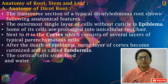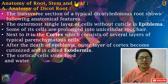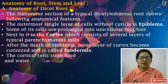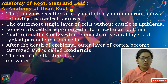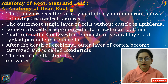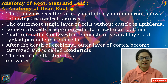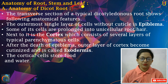Abhi tak aap padhke aa rahe ho only about tissues, their functions, right? So there is a different topic from previous. Ab hum log jo anatomy hai, roots ki, stems ki, leaf se start karte hain. Roots mein, stems mein, hum log do type ki padhenge — ek toh dicot, aur monocot. Dicot monocot toh aap log samajhte hain. The meaning of dicot — that means two cotyledons, and monocot — single cotyledon. Toh sabse pahle hum log start karte hain the anatomy of dicot roots.